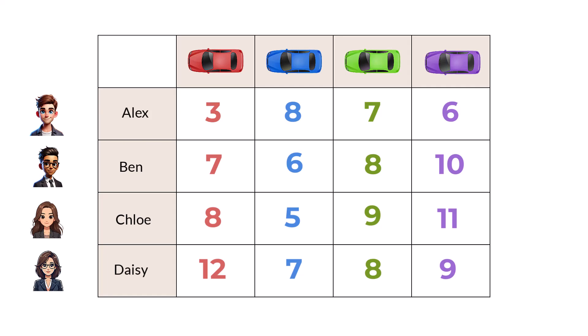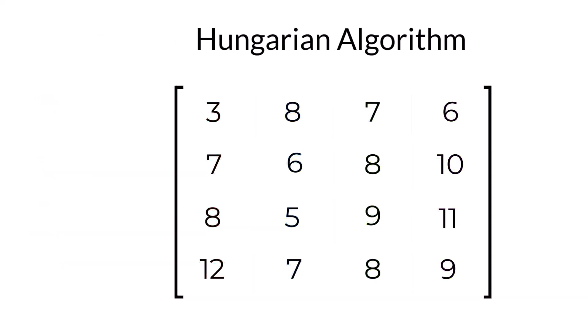This is where the Hungarian algorithm comes to the rescue. We start by changing the table to a matrix. Now, our problem's almost completely decontextualized. And, we now have a mathematical tool upon which calculations can easily be performed.